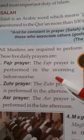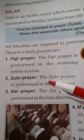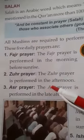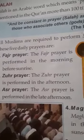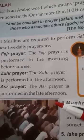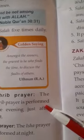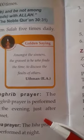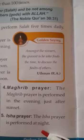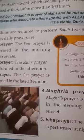What are the timings of these five prayers? Fajr prayer is performed in the morning before sunrise. Zuhr prayer is performed in the afternoon. Asr prayer is performed in the late afternoon, before evening. Maghrib prayer is performed in the evening just after sunset. Isha prayer is performed at night.